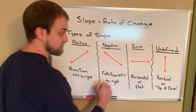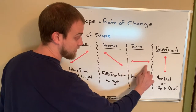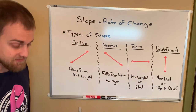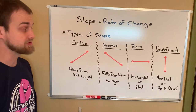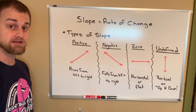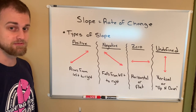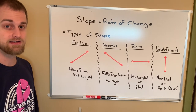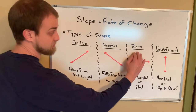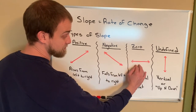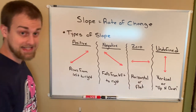Zero slope — what does that look like? Zero slope lines will be flat. Think about this: if you went to a skate park or a ski resort that said all of their ramps have zero slope, what would that ski resort look like? It would be totally flat. So lines that have zero slope are horizontal or flat.